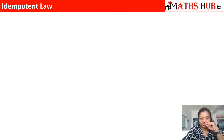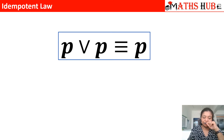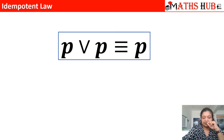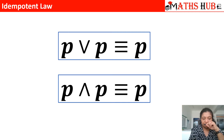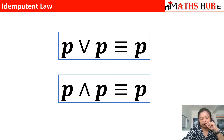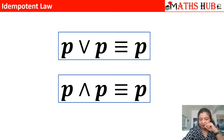The first law you need to learn is the idempotent law. Idempotent law says P disjunction P is equivalent to P, and the second sub-law says P conjunction P is equivalent to P. So for every law we will cover two sub-laws — one with disjunction and one with conjunction. If you remember one, the second can be traced by replacing the symbol. The idempotent law says that whether you take the conjunction or disjunction of P with itself, you get the same result.